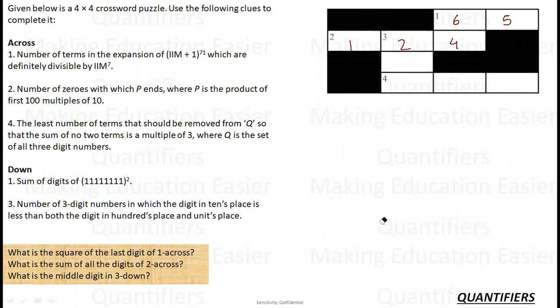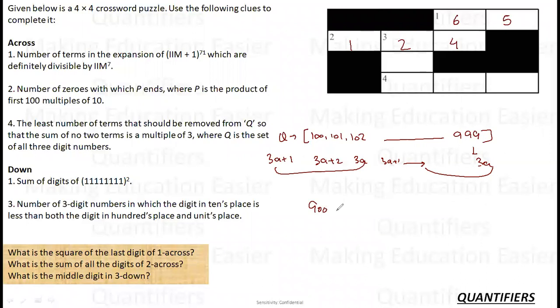Now what is the next clue? 4th across: the least number of terms that should be removed from Q so that the sum of no two terms is a multiple of 3. Where Q is the set of all the 3-digit numbers. Then Q is the set of 100, 101, 102 up to 999. All the 3-digit numbers. 100 is of type 3A plus 1. 101 is 3A plus 2. 102 is 3A. Again, 3A plus 1 plus 2 and so on, and the last term 999 is 3A. The cycle is complete. How many terms are there? 900 terms are there. Which means there are 300 terms of type 3A plus 1, 300 terms of type 3A plus 2, and 300 terms of type 3A.